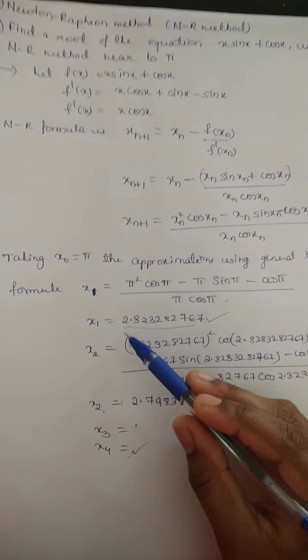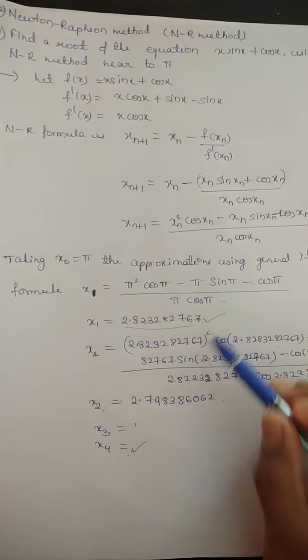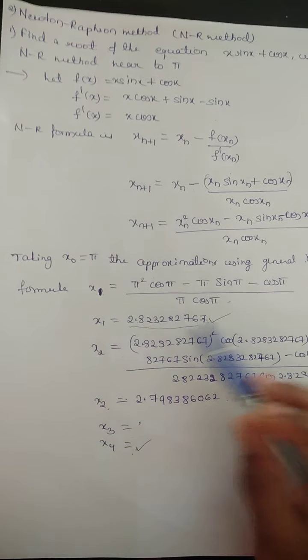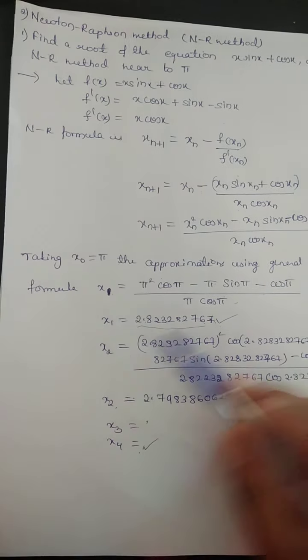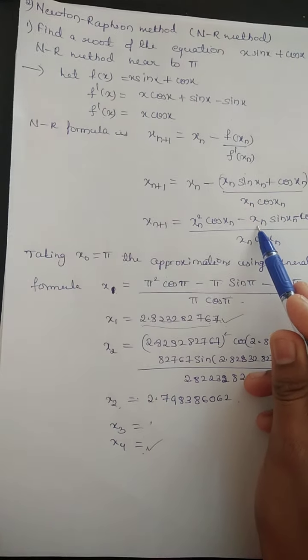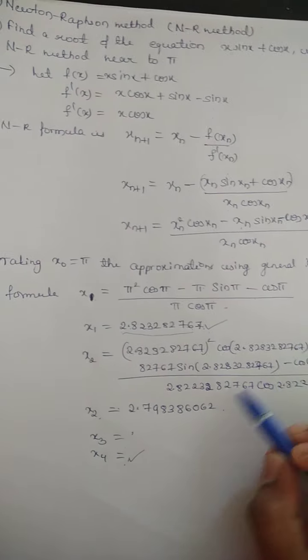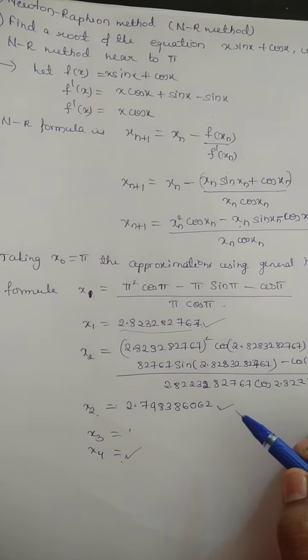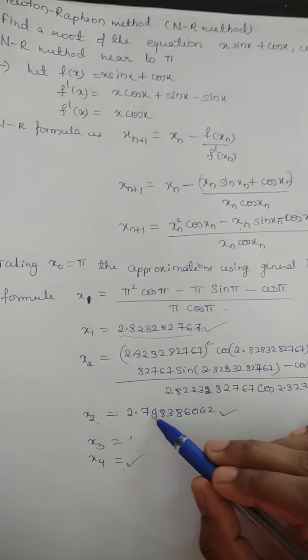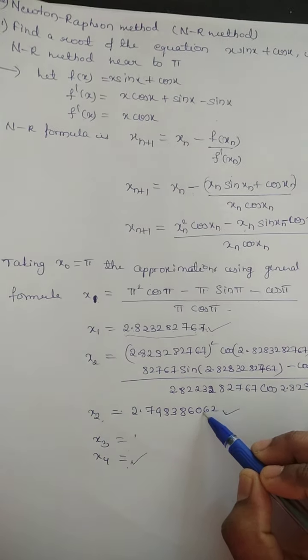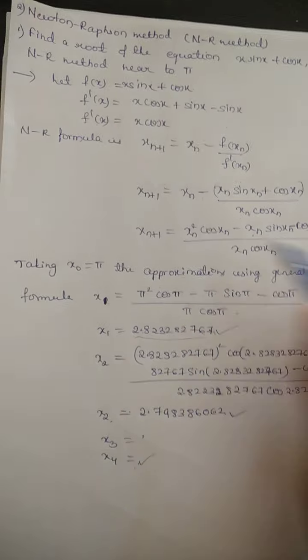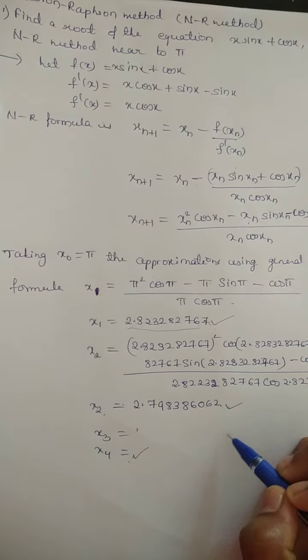Now a first approximation we got x_1. I have taken 9 digits after decimal point. So x_2, we have to put this value in the general iteration formula and find out. Second iteration approximation I got 2.79838606. Now we have to put this value again here in this formula, we will get third iteration.